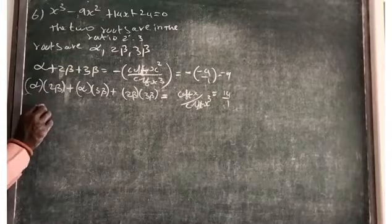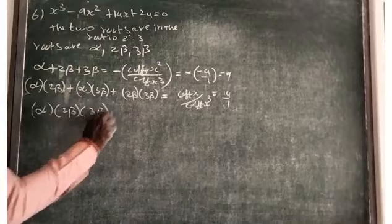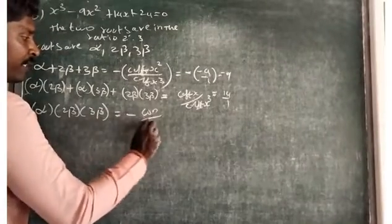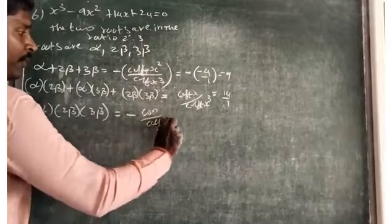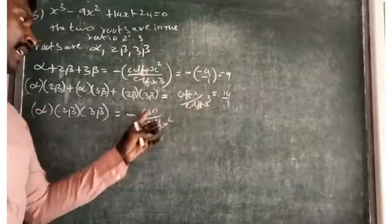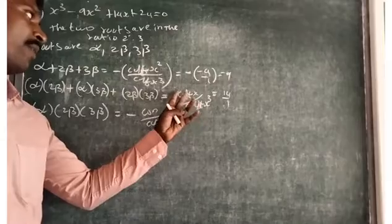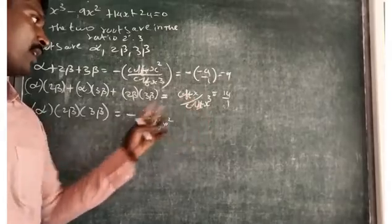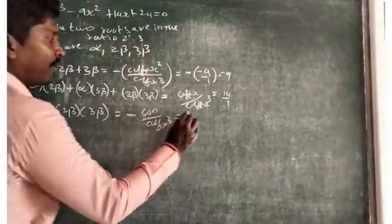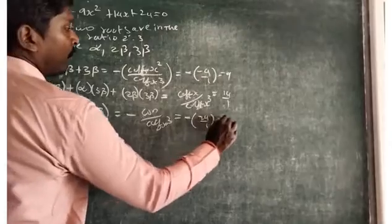The product of all three roots — alpha times 2 beta times 3 beta — equals minus of the constant term by the coefficient of x cubed, that is minus d by a. So, minus of 24 by 1 equals minus 24. Multiplying alpha times 2 times 3 gives 6, so 6 alpha beta squared equals minus 24.